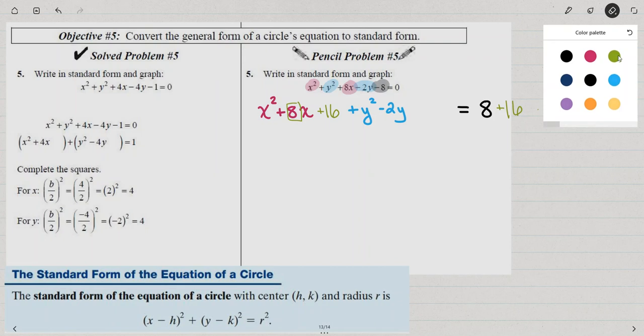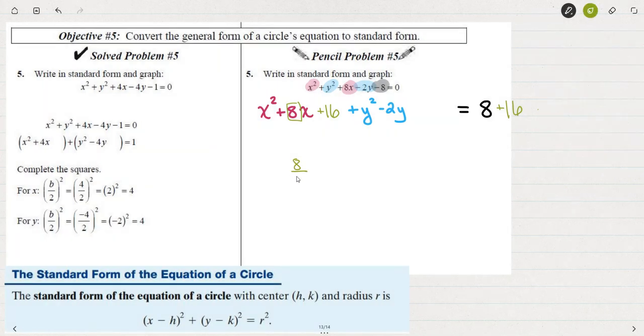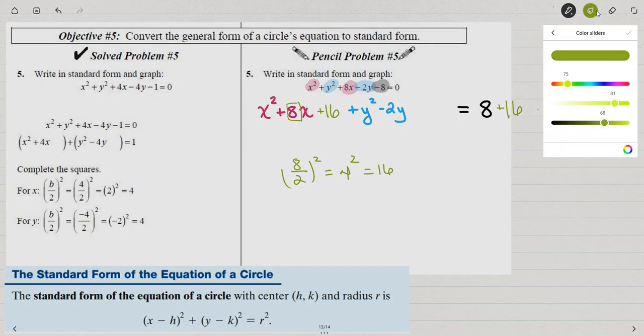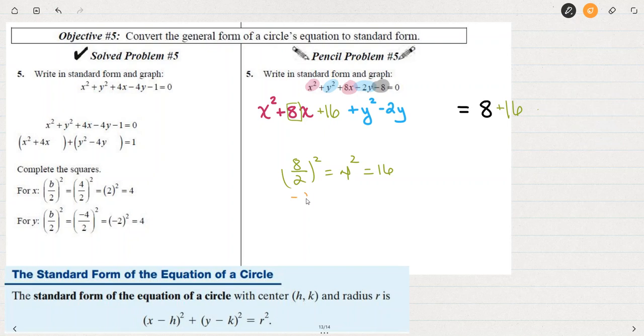What I've done here is the 8 cut in half and squared, 4 squared is 16. And then let's do the same thing for the Y's. The negative 2 cut in half and then squared. Negative 2 cut in half, half of negative 2 is negative 1, and negative 1 squared is 1. So I'm going to add a 1 to the Y squared minus 2Y. And since I added 1 on the left, I'll add 1 to the right.